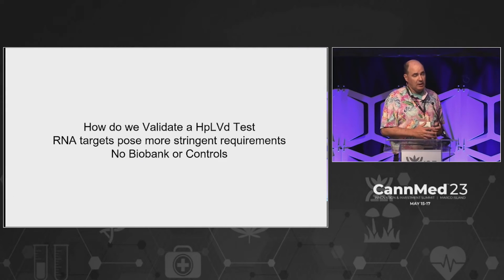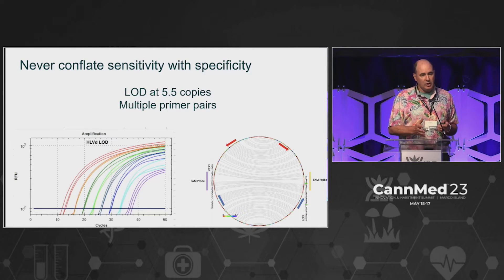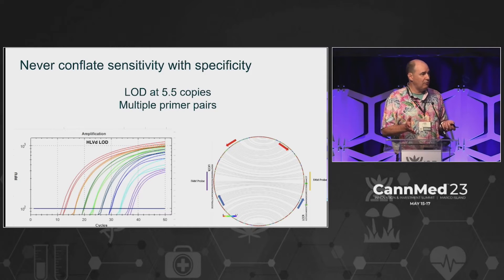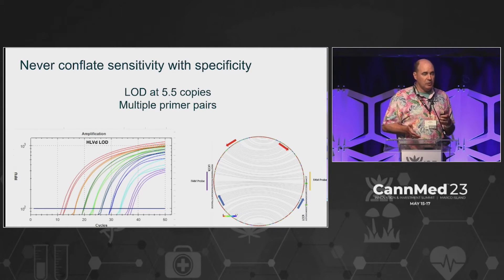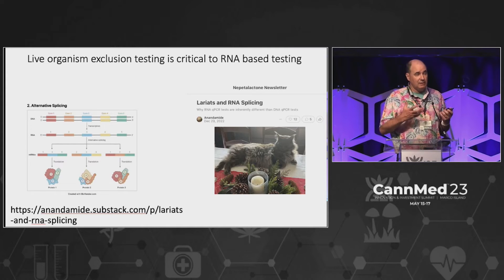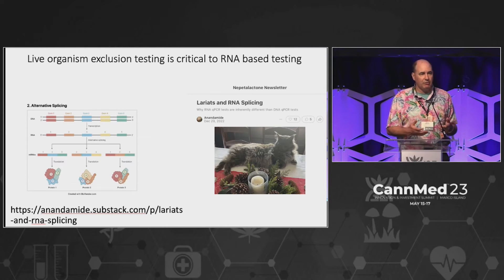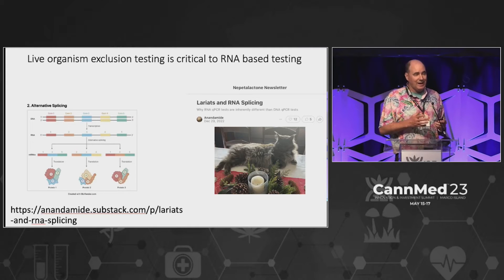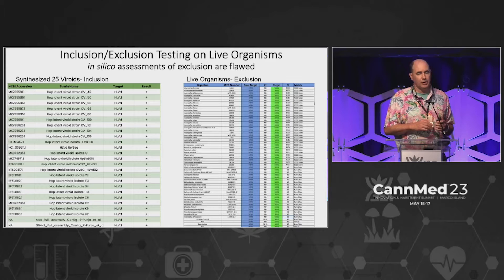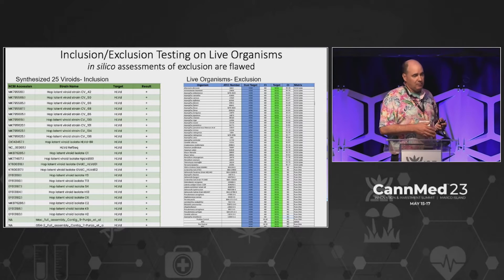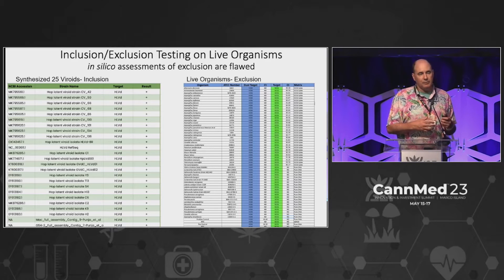How do we validate a test to make sure we can pick up all this variation? You need very high sensitivity, and you don't want to confuse that with specificity. If you put primers in the wrong place on this viroid, you can get background off the cannabis genome due to homology. You should also have more than two primer sets so you're not missing rare variants. RNA tests need a lot more scrutiny than DNA — you can't just do in silico predictions, you have to test against real living organisms. We've tested on 50 different organisms commonly found in cannabis and chemically synthesized 25 different viroids to validate the assay.